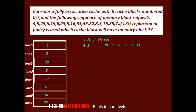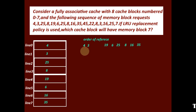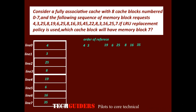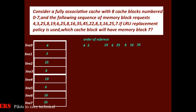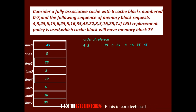We are using the least recently used replacement policy. In the order of reference, the least recently used block is memory block 4. So we replace memory block 4 with block 45. Block 45 is now the most recently used, and memory block 4 is no longer in the cache.